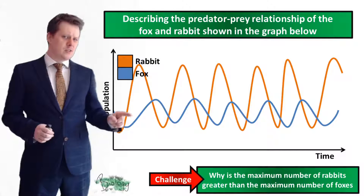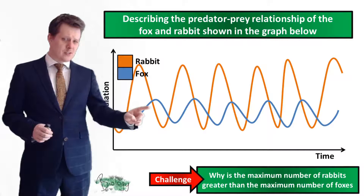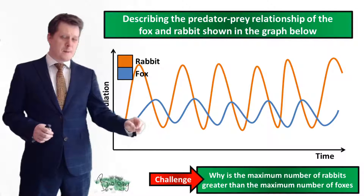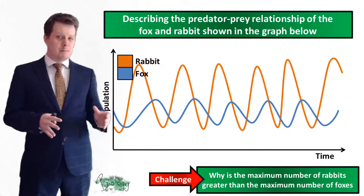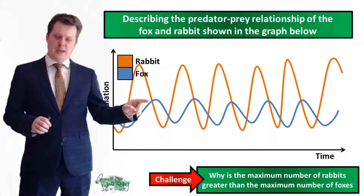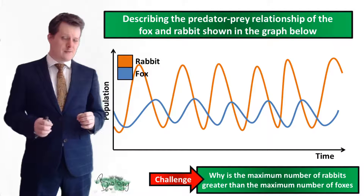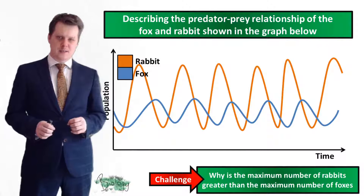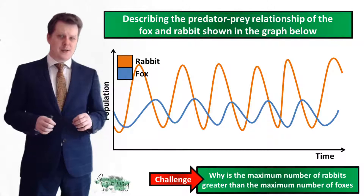But then as the number of foxes gets higher, the number of rabbits start to decrease, because more foxes are going to need to eat more rabbits. When we get to this point, there is not enough food to feed all of our foxes, so some of our foxes are going to die out.